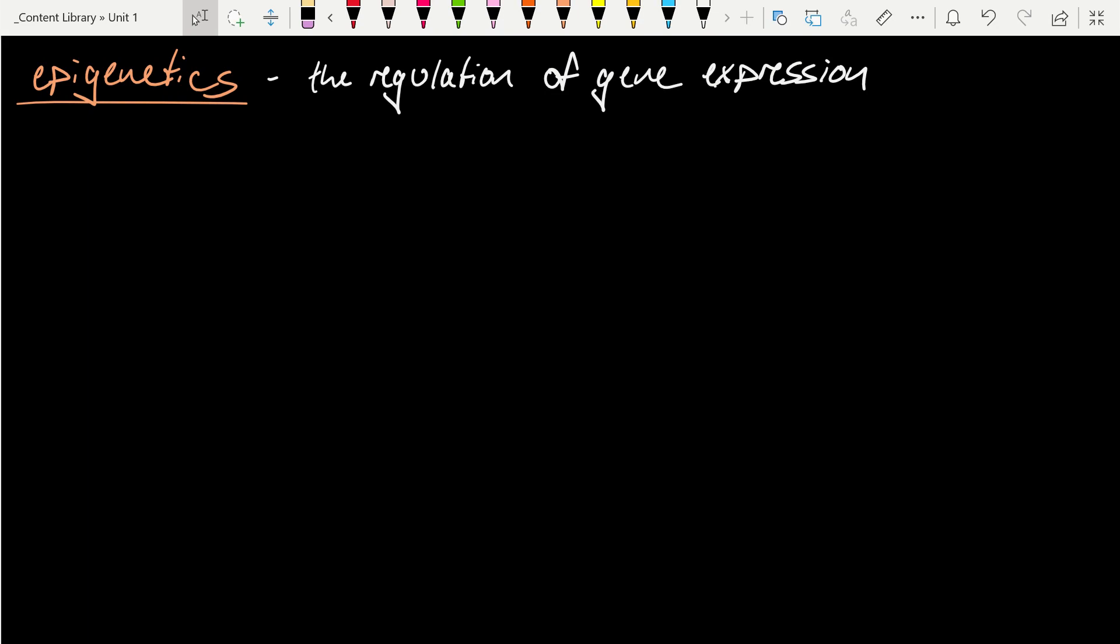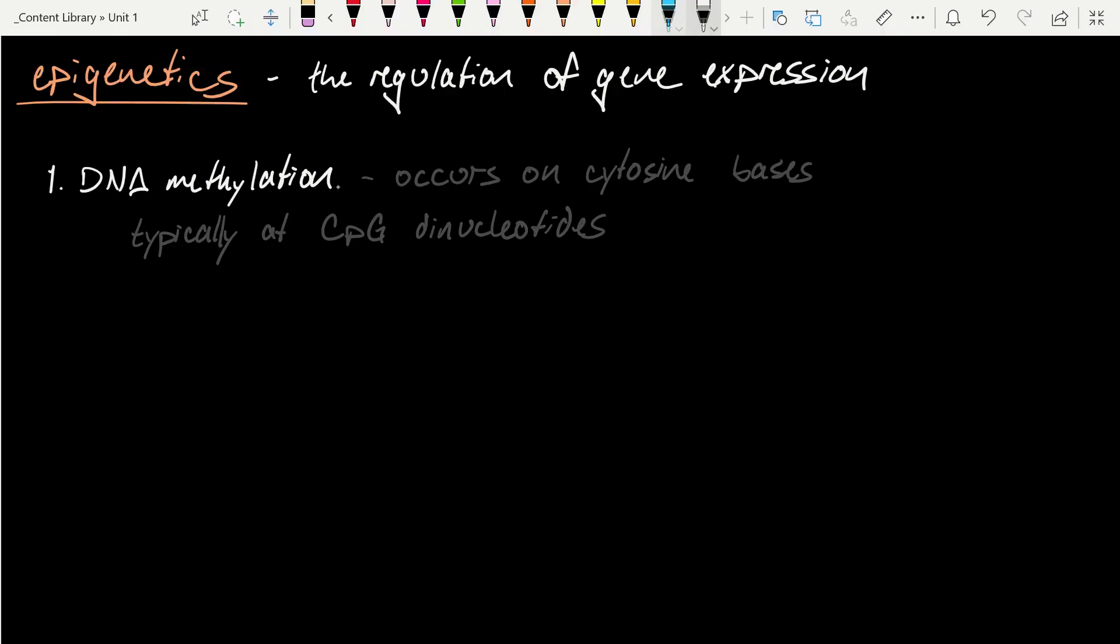There are three basic principles that we can look at when we think about epigenetics. The first is DNA methylation. This is done by adding methyl groups to cytosine bases, typically at CpG dinucleotides. And importantly, this has a silencing effect.